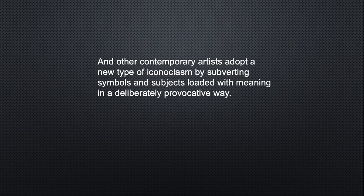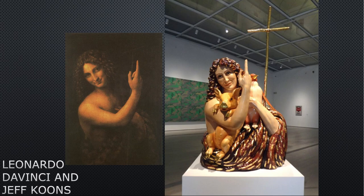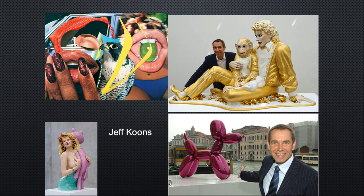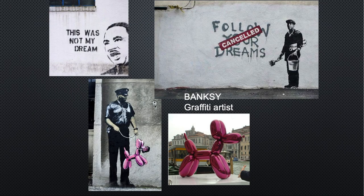Other contemporary artists adopt a new type of iconoclasm by subverting symbols and subjects loaded with meaning in a deliberately provocative way. Leonardo da Vinci got co-opted by Jeff Koons, who is a neo-pop artist. He takes a lot from pop culture — Pink Panther, Michael Jackson, balloon animals — and he does not do the work himself; he has a team of people who make it, which is kind of controversial.